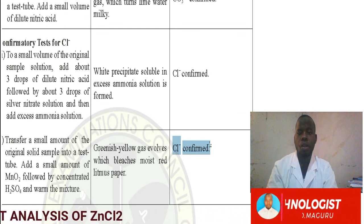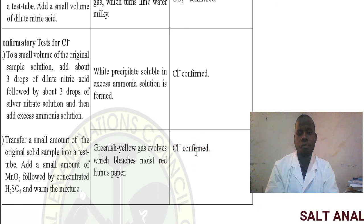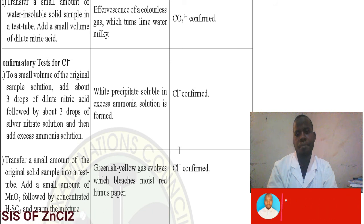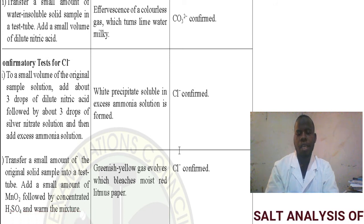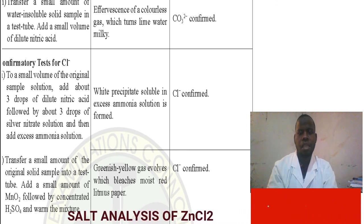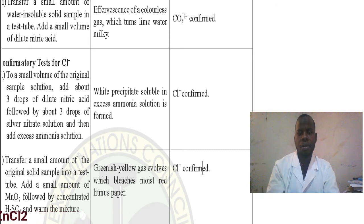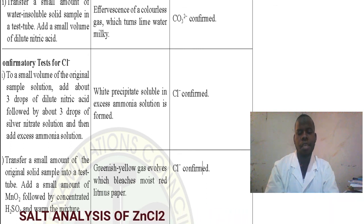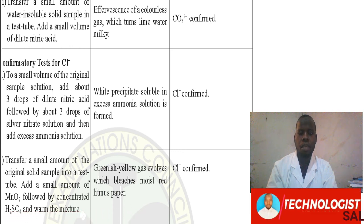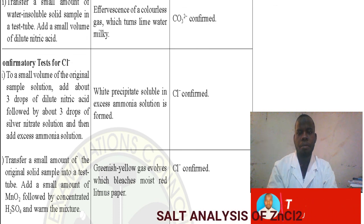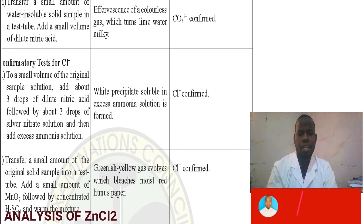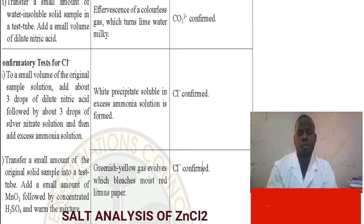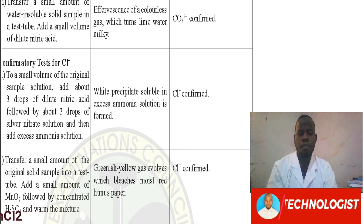That is our analysis of zinc chloride. The cation is the zinc ion and the anion is the chloride ion. The compound is zinc two chloride, with the chemical formula ZnCl₂, and the chemical name is zinc(II) chloride. We end here for the analysis of zinc chloride. Thank you for learning with me. Please give a comment about this lesson, subscribe to our channel, like it, and share with your fellows.